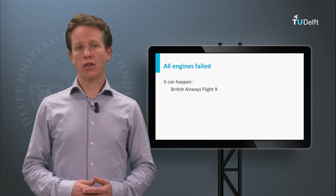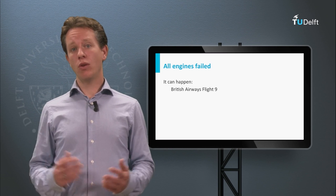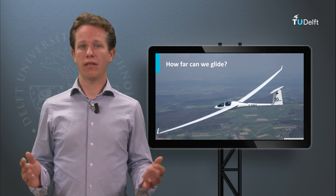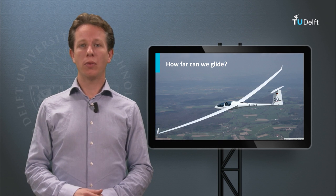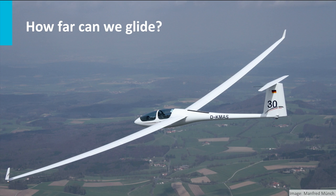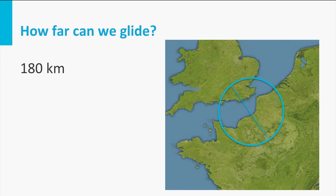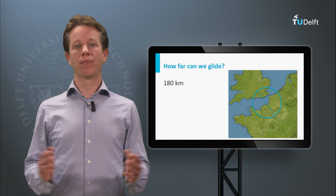For our example there is unfortunately no other option than to start a gliding flight. How far do you think this aircraft will be able to glide? A typical commercial aircraft can glide more than 170 km from 10 km altitude. Thus, in this specific scenario the pilot could actually choose to glide either to London or to Paris safely. That is impressive, isn't it?